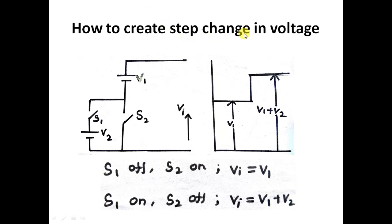How to create a step change in voltage when you do simulation? You use this circuit. Initially S2 alone is on, S1 is off. If this alone is on, the voltage is V1.